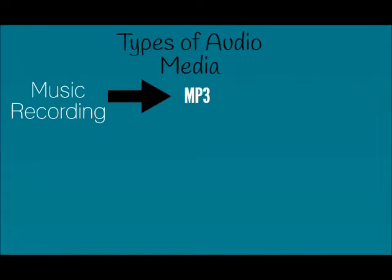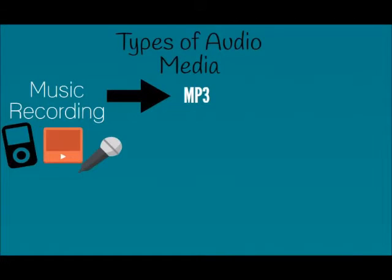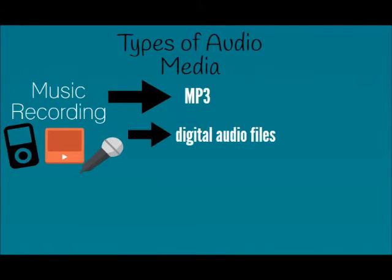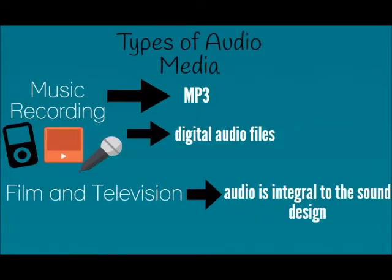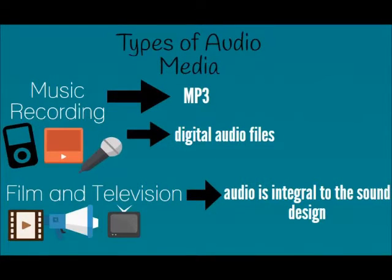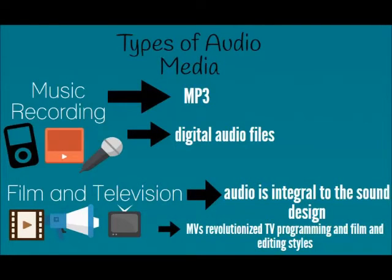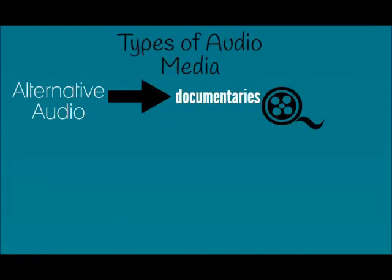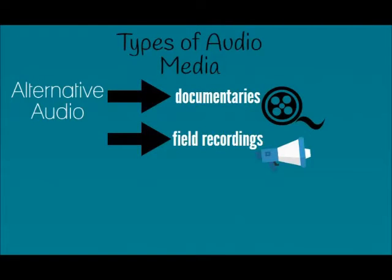Number three is music recording, whose dominant format is MP3. It takes digital audio files such as those recorded on an audio CD. Number four is film and television: audio is integral to the sound design of movies and television, and music videos revolutionized TV programming and film editing styles. Number five is alternative audio, whose forms include documentaries based on interviews, field recordings of actualities or ambience, and sound effects recorded in the field.